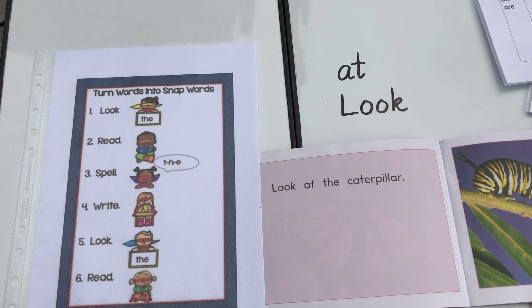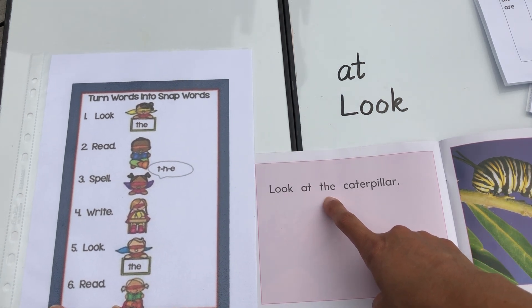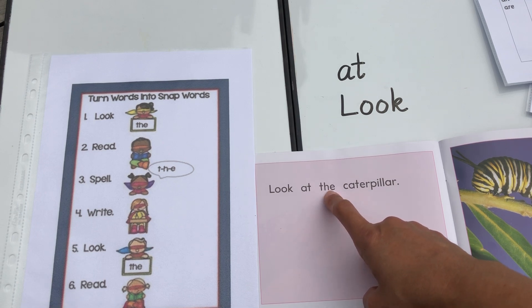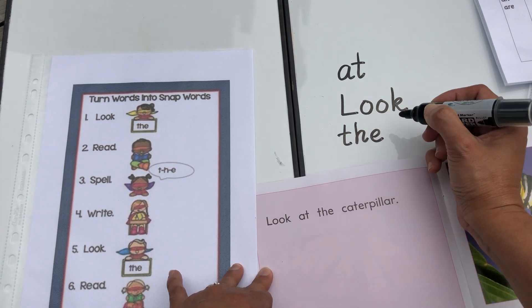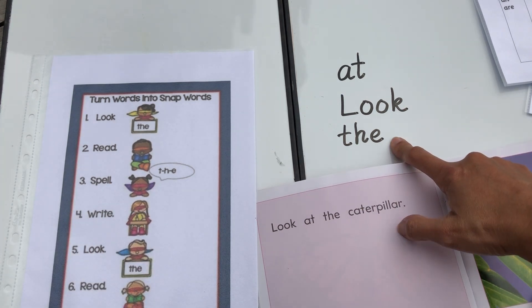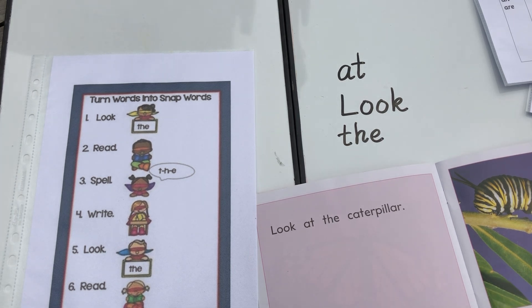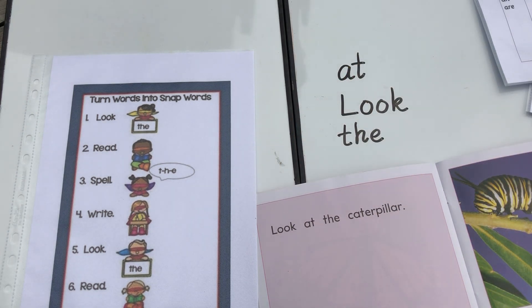Any other word that we can turn into a snap word? Yes — the word 'the.' Here's how you do it. First, you look at the word 'the.' Read it — the. Spell it — T-H-E. Now write the word 'the.' And then you look at it and then read it again — the. Great job! Now tuck the word 'the' in your pocket, and then you have three words that you can read in a snap — words you have turned into snap words.